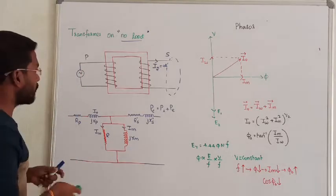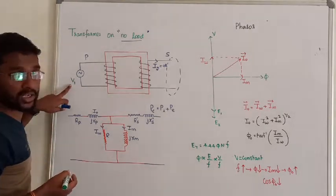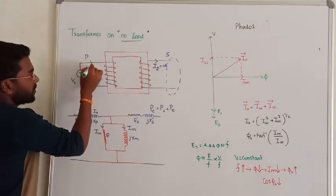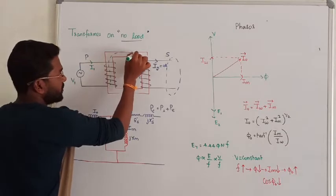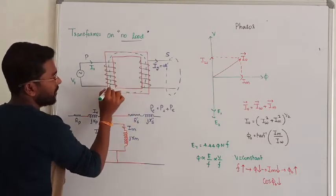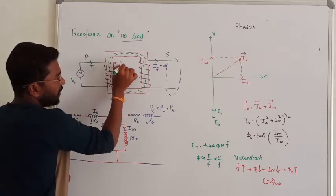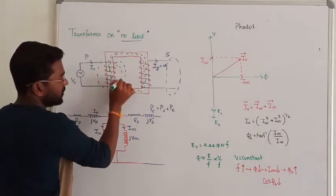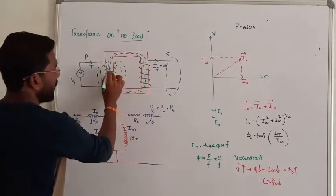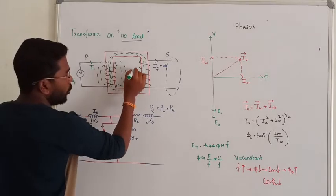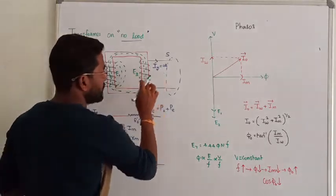When we connect an AC alternating supply from the primary side, voltage V1 is applied and will produce some current I1. When I1 flows in the primary winding, it will create some flux. Some of this flux will travel through the secondary winding and some will leak around the primary as leakage flux. In the secondary winding, this flux will cut and generate two EMFs: E1 and E2.